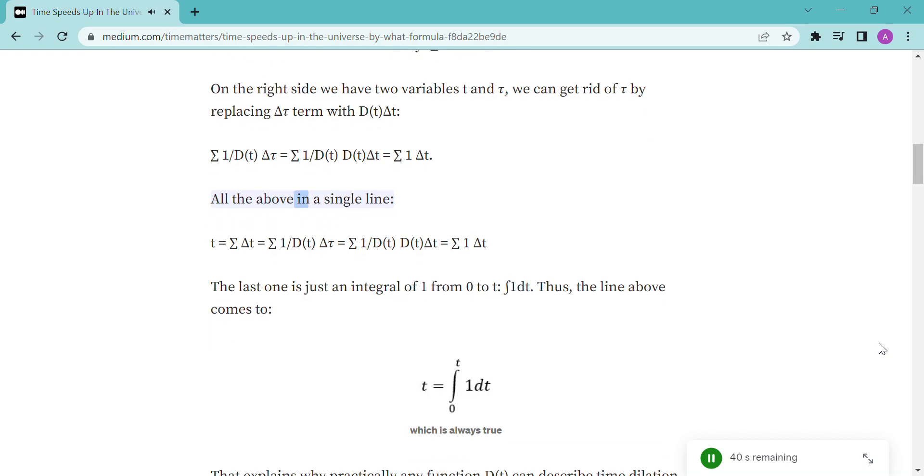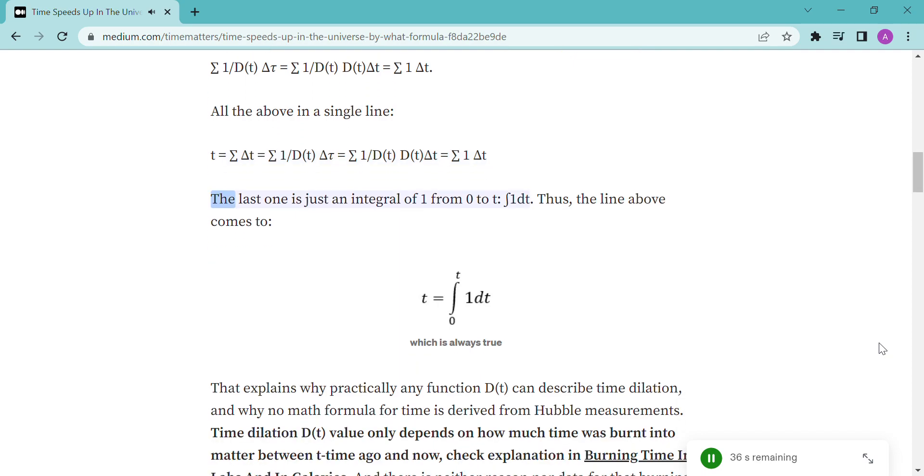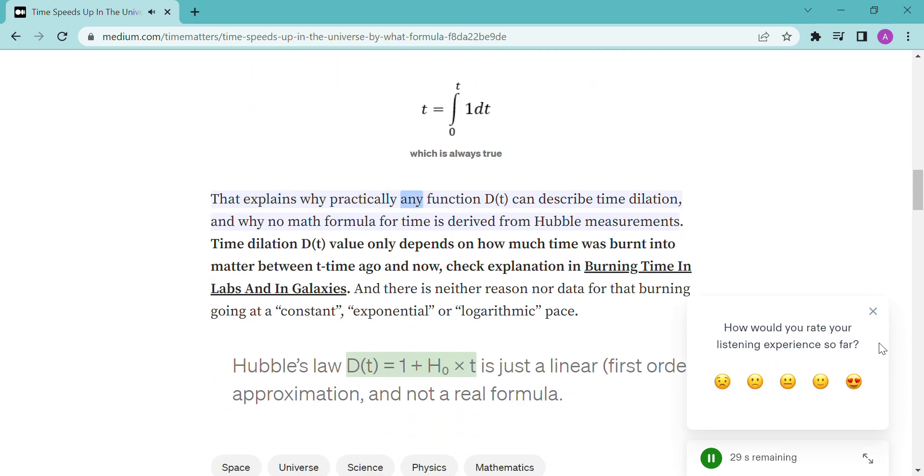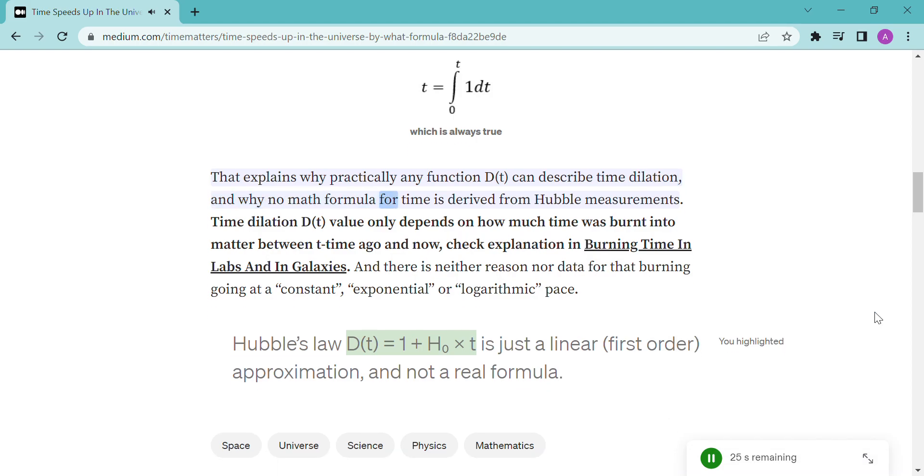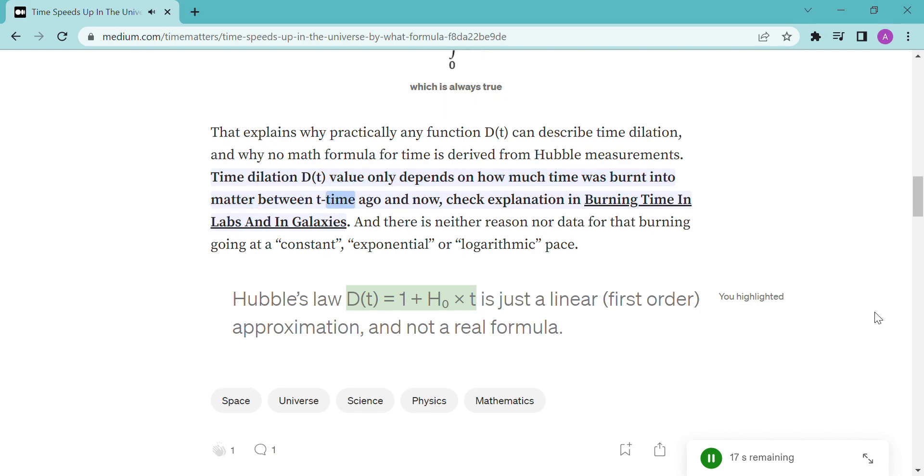All the above in a single line. T equals delta T equals 1 over DT delta tau equals 1 over DT times DT delta T equals 1 delta T. The last one is just an integral of 1 from 0 to T, 1 DT. Thus, the line above comes to T equals integral from 0 to T of 1 DT. That explains why practically any function DT can describe time dilation, and why no math formula for time is derived from Hubble measurements. Time dilation DT value only depends on how much time was burned into matter between T time ago and now.